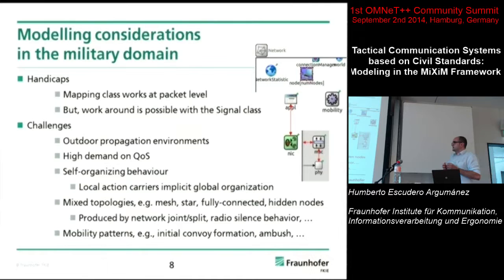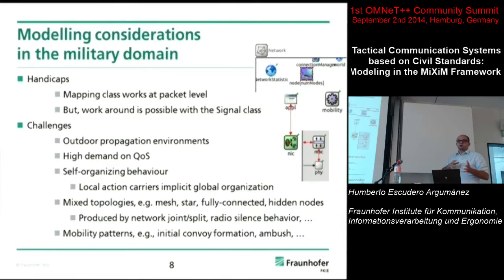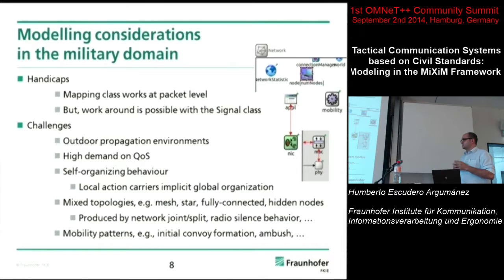Further challenges include the high demand on quality of service — essentially queuing strategies — and the self-organizing behavior. Our MAC layer has to be aware of what's happening outside. Using local behavior, we can implicitly achieve global synchronization: if I know I have two hidden nodes using time slots X and Y, I avoid those time slots to prevent interference at my receiver. We also deal with different mixed topologies — mesh, star, full mesh, and hidden nodes — which are very hard to model.